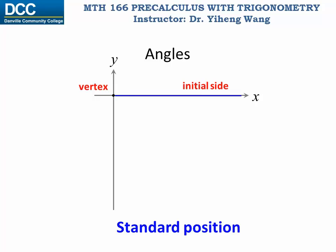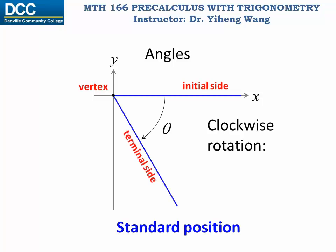On the other hand, if the angle was created by rotating this ray clockwise, then this angle is known as a negative angle.